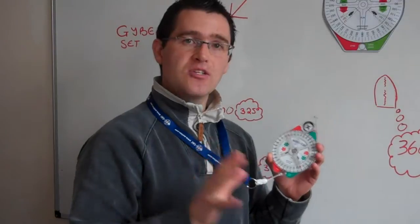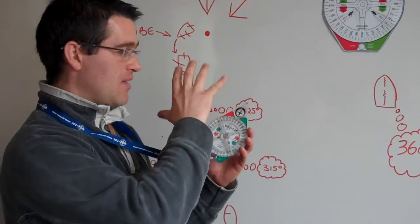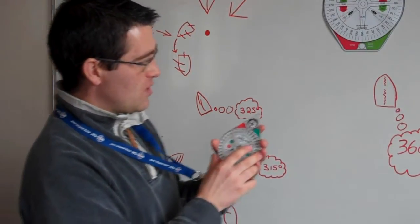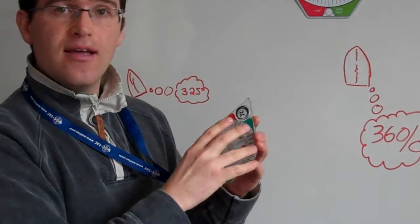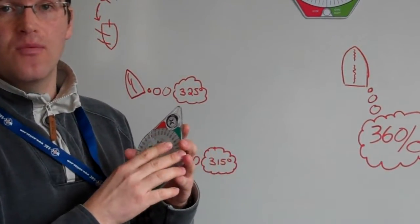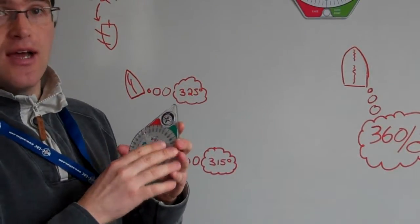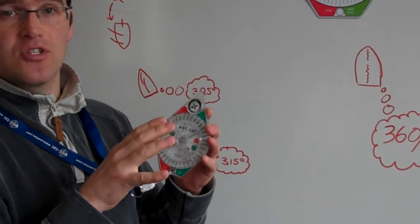So the first thing we need to do to help the Wattac make this decision for us is we need to dial the current wind direction into our Wattac. From our previous video, Wattac line bias, I explain in detail how to do that.